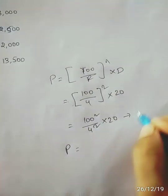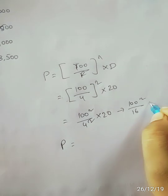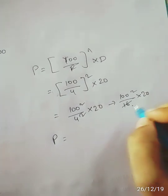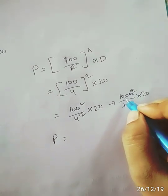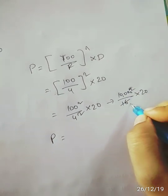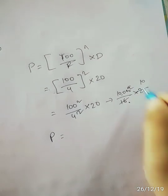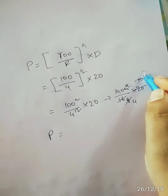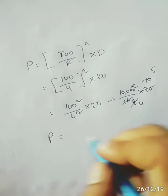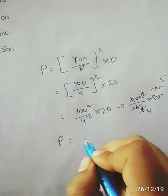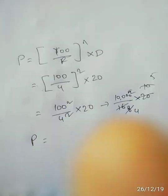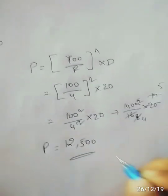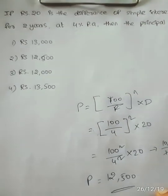The difference is 20. So P = (100)² / (4)² × 20. That is 100 squared by 16 into 20. After cancelling, we get 10,000 divided by 16 times 20, and the final calculation gives P equal to 12,500.